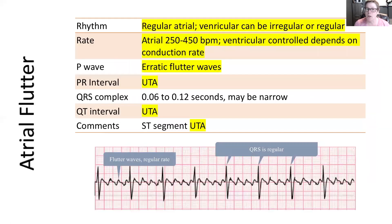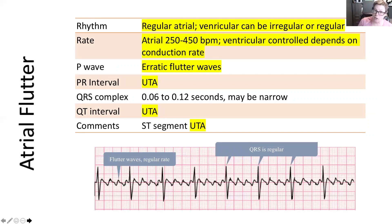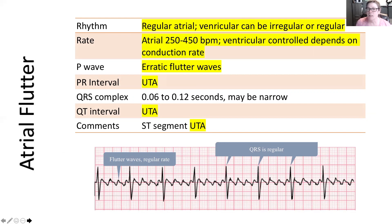When we look at our characteristics and measuring our waveforms for an atrial flutter, we can see that the regular atrial rhythm and the regular ventricular rhythm will be apparent. Now, it may also be irregular. More often in my experience, I've seen where it's a fairly consistent conduction, or a minor difference between a few beats.